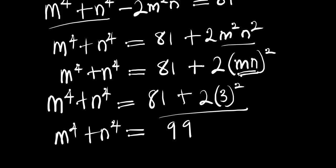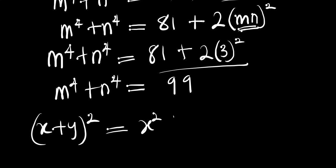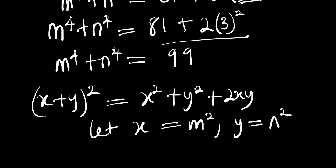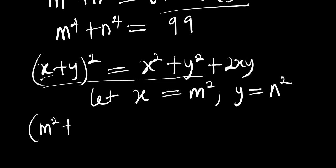Next, let's consider this identity: if you have (x + y)², this equals x squared plus y squared plus 2xy. We let x equal m squared and y equal n squared.